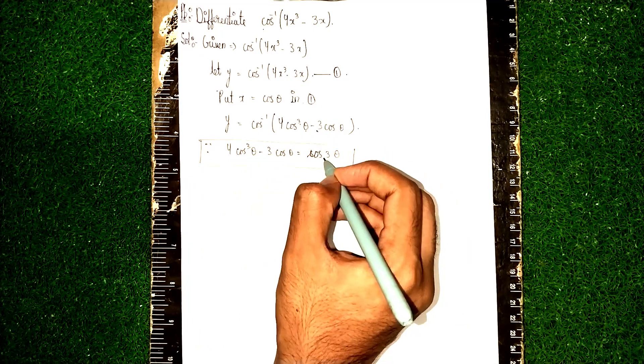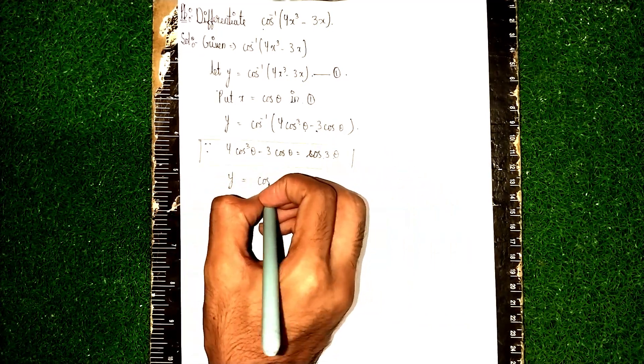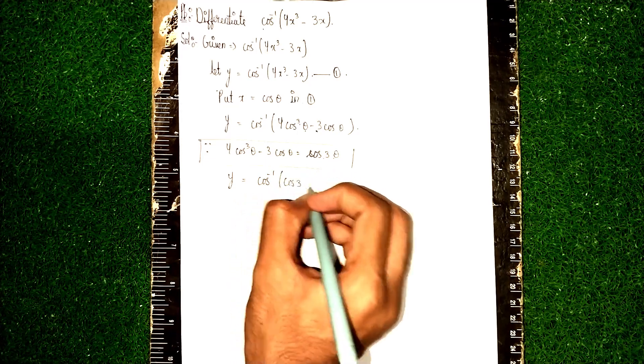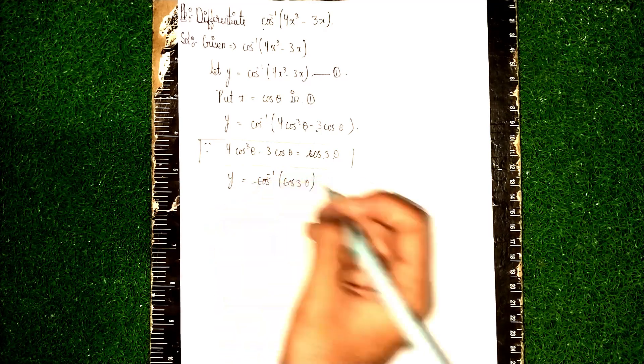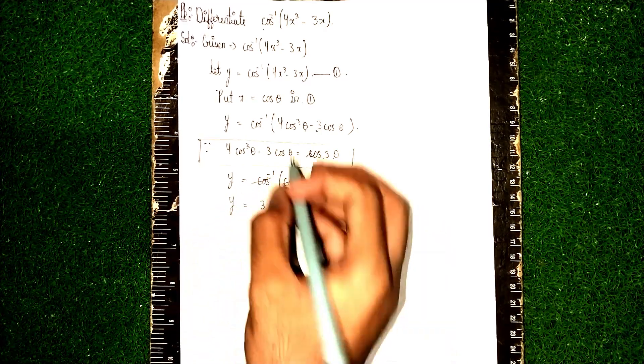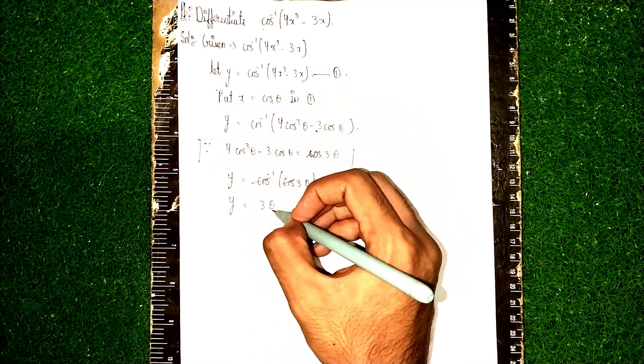What becomes? y equal to cos inverse of cos 3θ. Now here, this cos and cos inverse get cancelled. What is the meaning? y equal to 3θ. Now in the question, we have taken x equal to cos θ. Instead of θ, I can substitute.